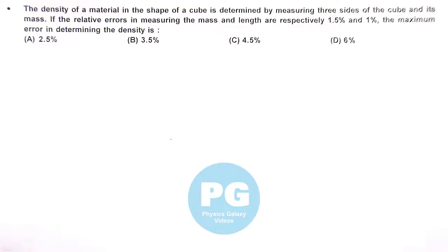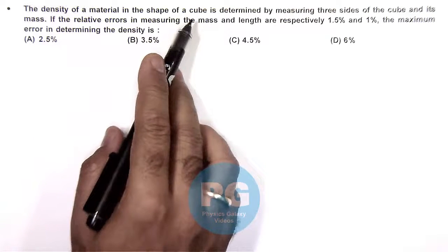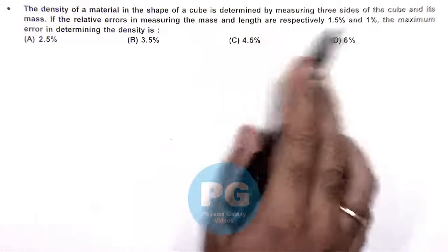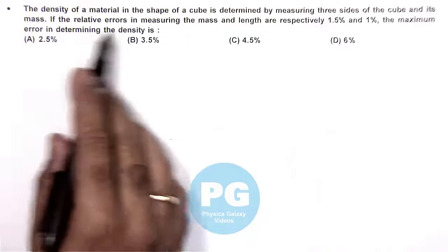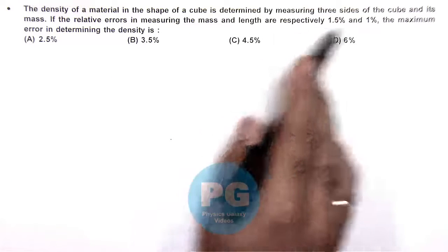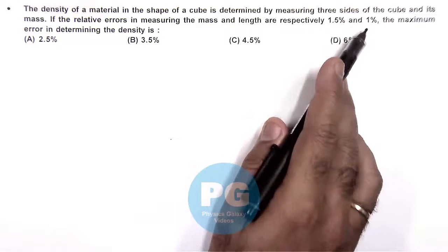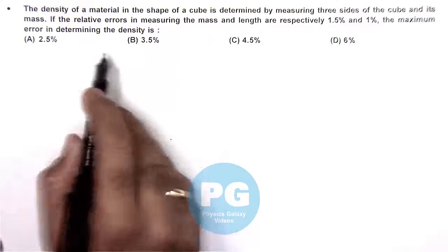In this question, it is saying that the density of a material in the shape of a cube is determined by measuring three sides of the cube and its mass. If the relative errors in measurement of mass and length are respectively 1.5% and 1%, then the maximum error in determining the density we are required to calculate.